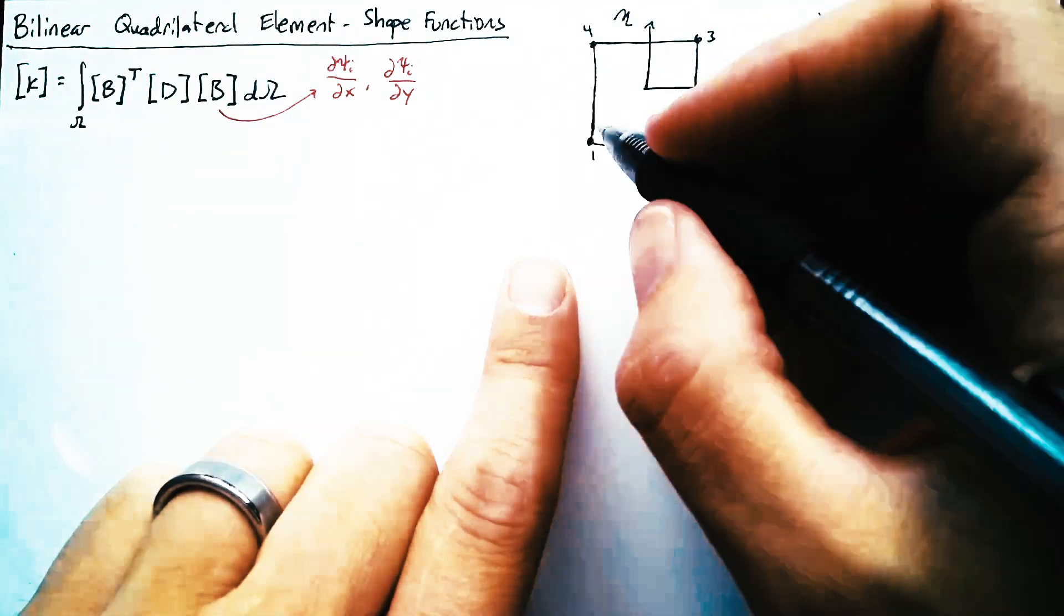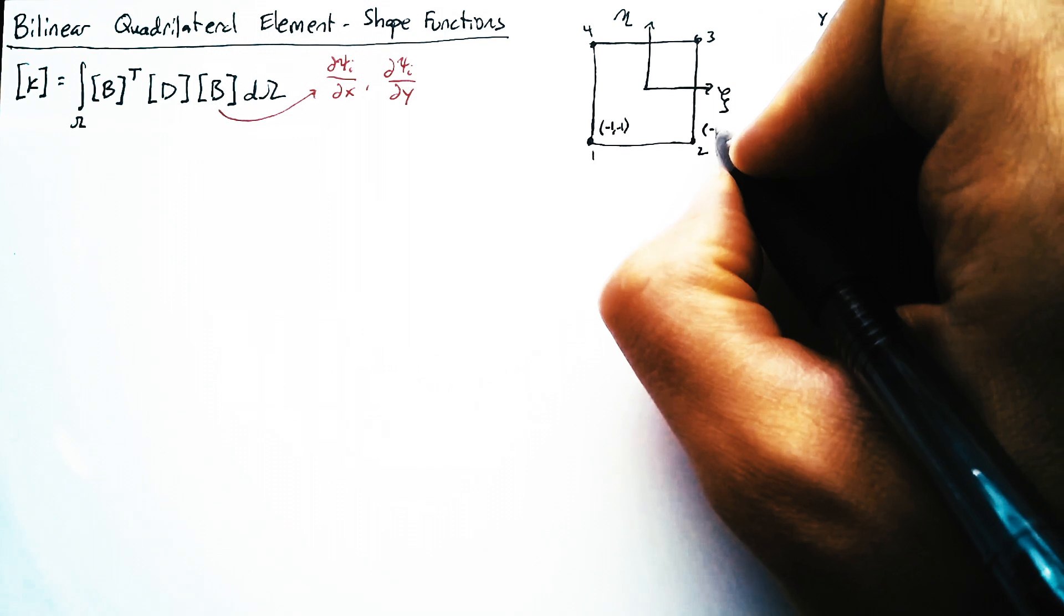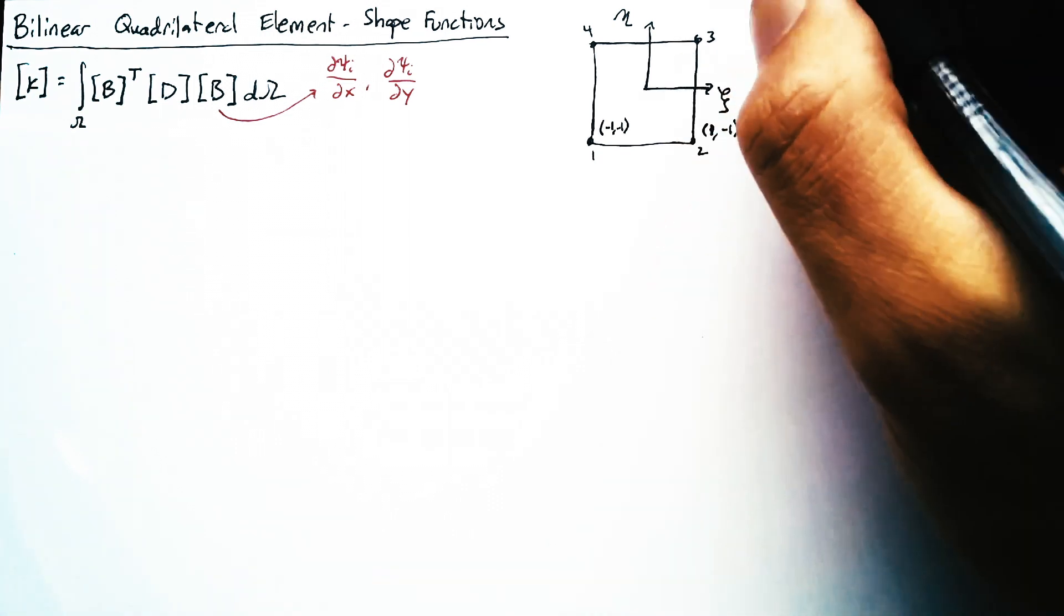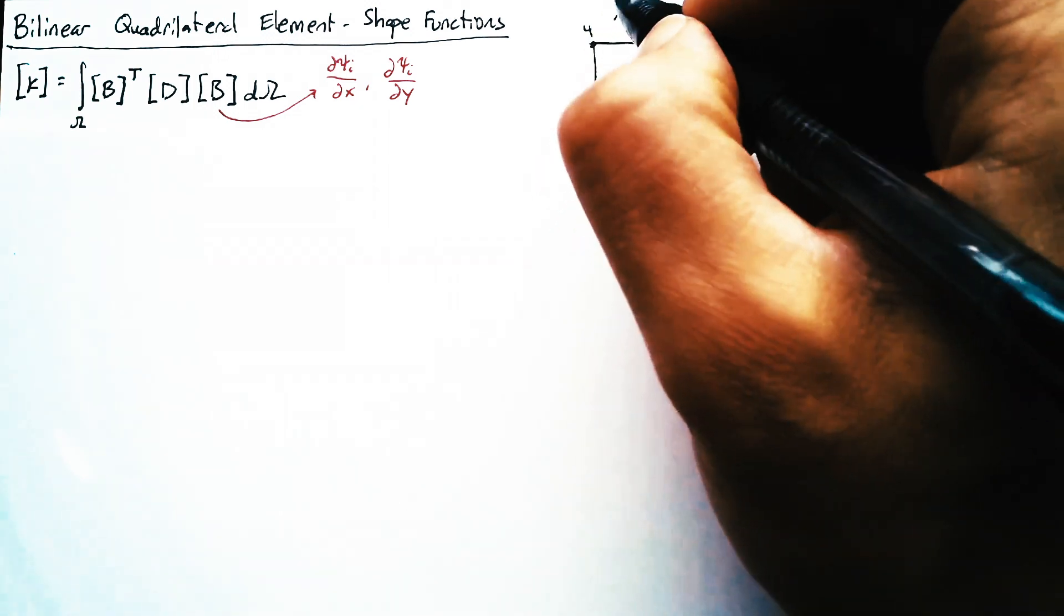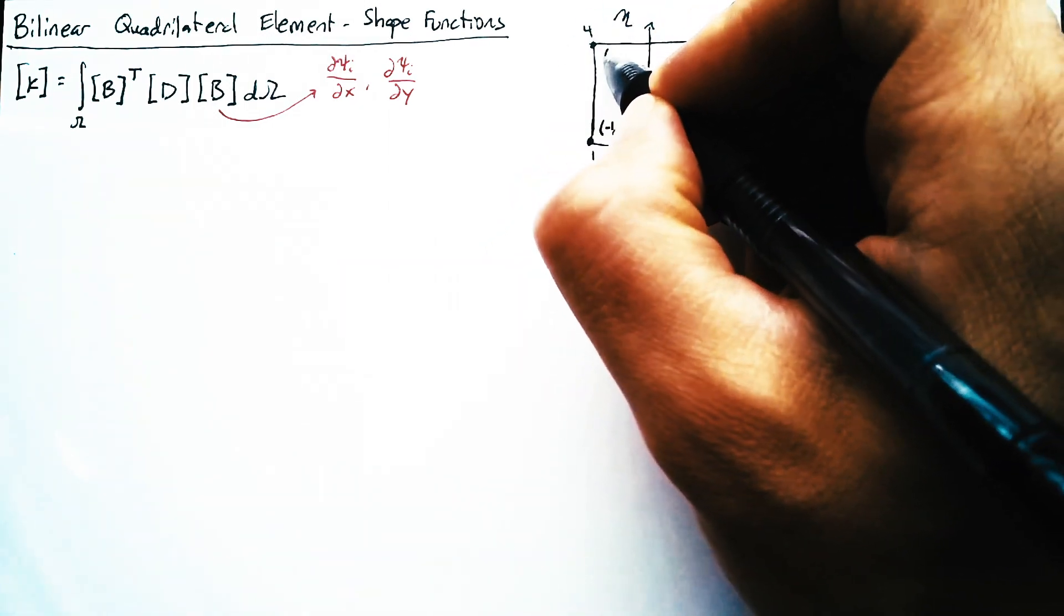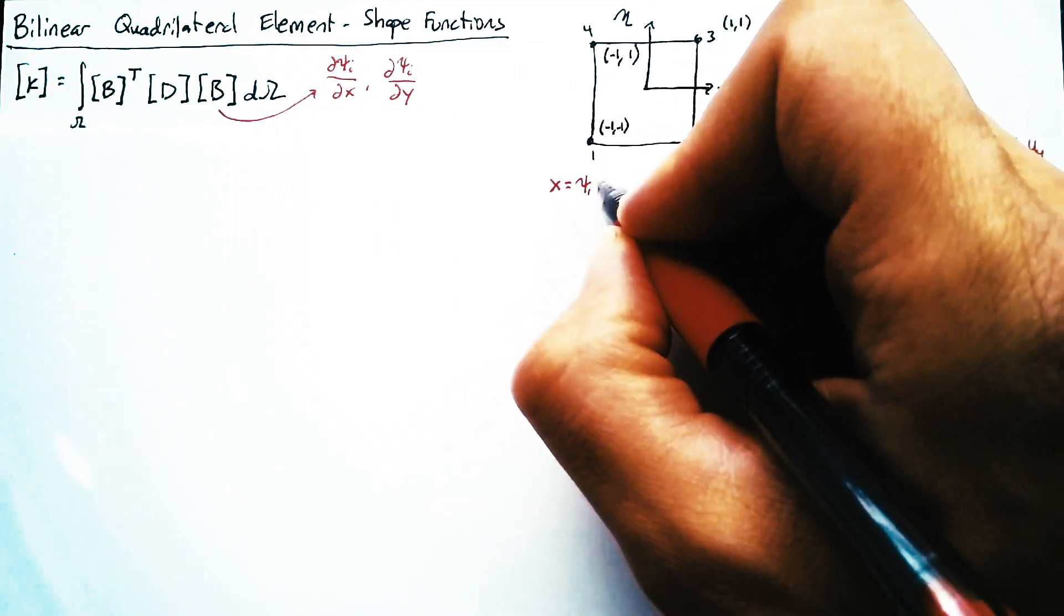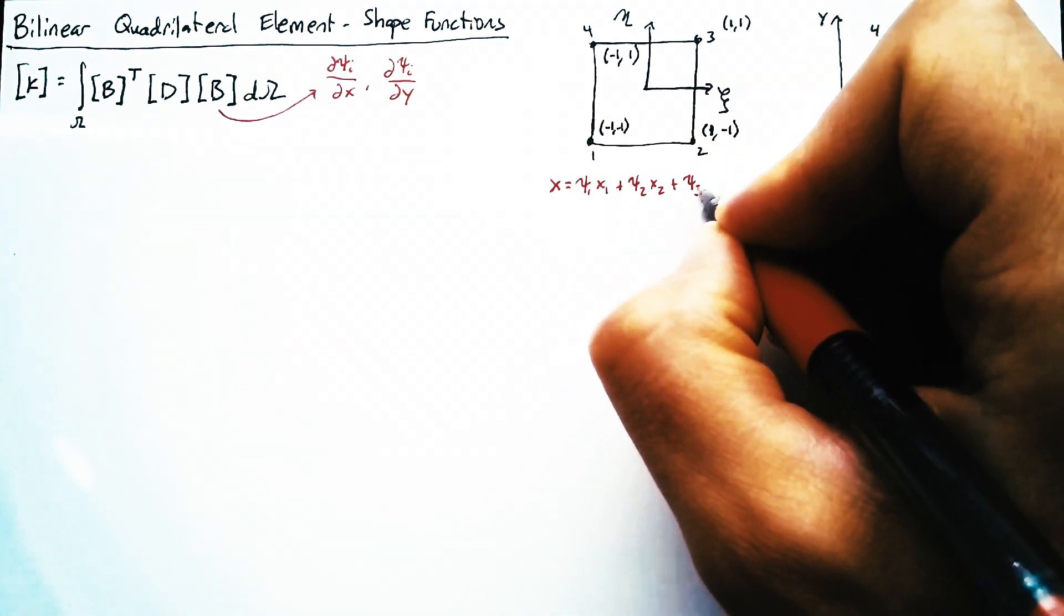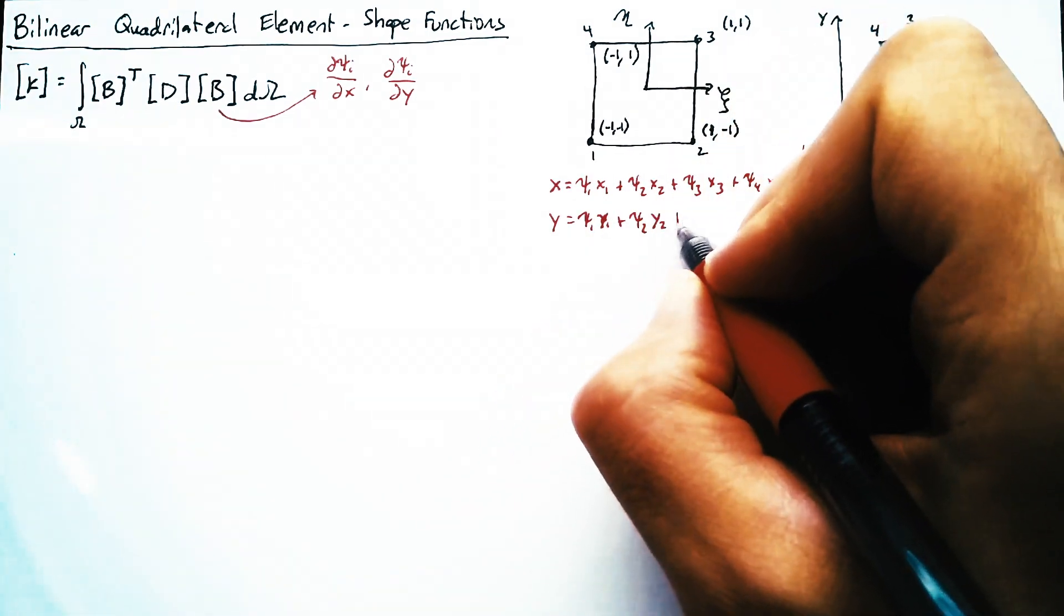So this node 1 is going to have coordinates negative 1, negative 1. Node 2 is going to be positive 1, negative 1. Node 3 is positive 1, positive 1. And then node 4 is negative 1, 1. And so just like with U and V, we're going to have X and Y defined as a sum of shape functions and nodal positions.